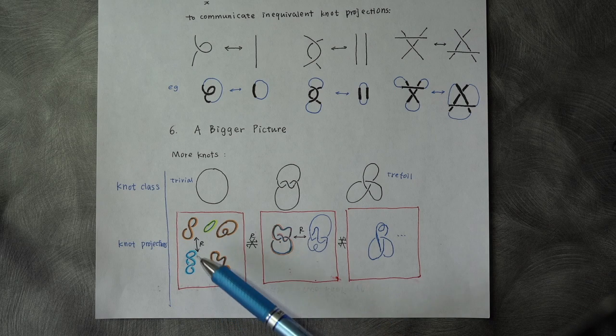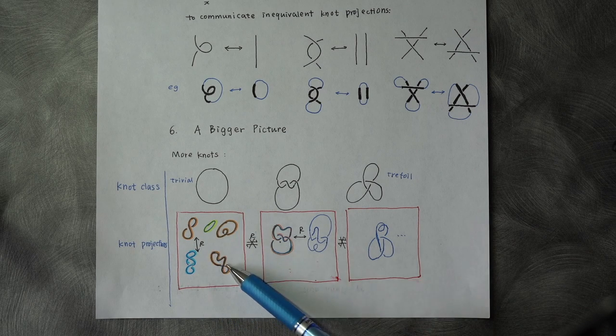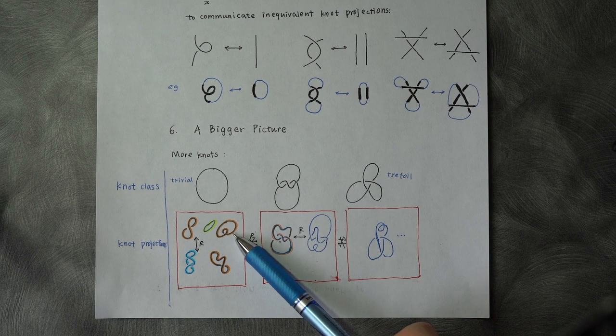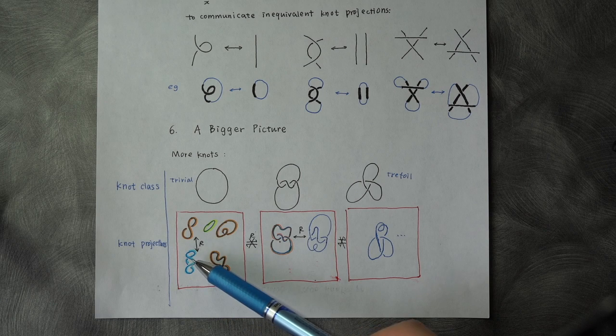and among those elements, they can reach each other by Reidemeister moves. The same colors represent the same knot projection classes, and different colors are communicating by Reidemeister moves.